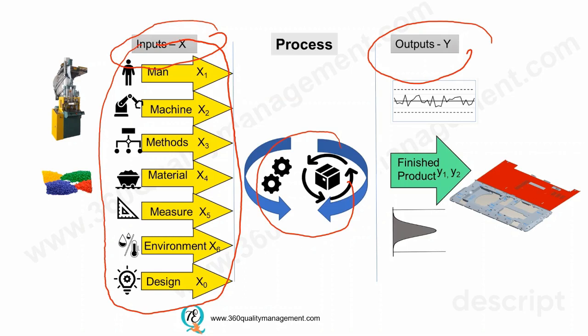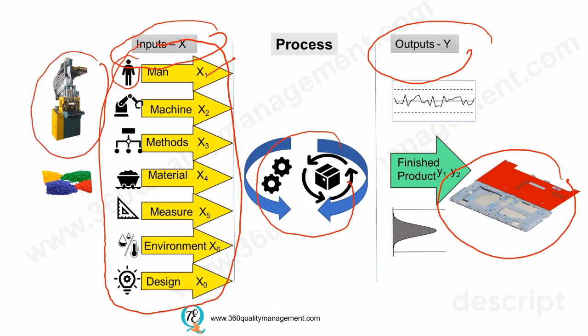In the case of a mechanical chassis of a laptop part, the key process input for 'man' — one of the key aspects — is the operator that makes the product. One of the basic requirements is that we need to ensure they are properly trained or certified to build the product. The machine will be the molding machine that is used for material transformation.